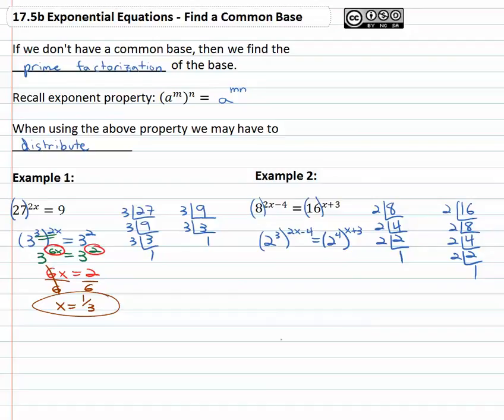Again, we're going to have to multiply our exponents together. We've got that common base we want, but we want to simplify a bit. And as we multiply, we don't want to just multiply the 3 by the first term. We want to multiply it by the entire exponent. It's going to distribute through. So we have 2 to the 3 times 2 is 6x, minus 3 times 4 is 12, equals 2 to the 4x, distributing again, plus 12.